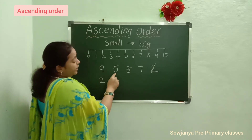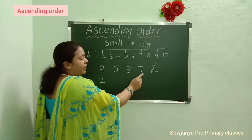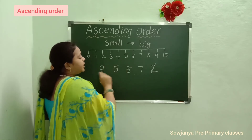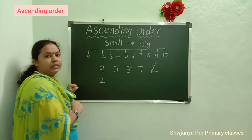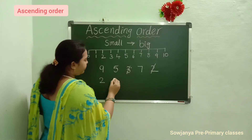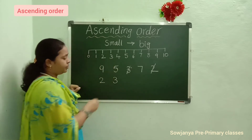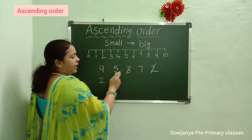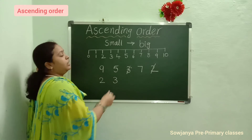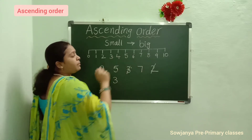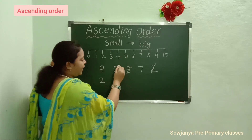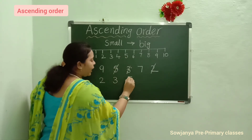Next, from 9, 5, 3, 7 — observe which is the small number. Yes, 3. Now cross the 3 and write 3 here. Now from 9, 5, and 7, which is the small number? See on the number line. Yes, 5. Cross 5. Write here 5.